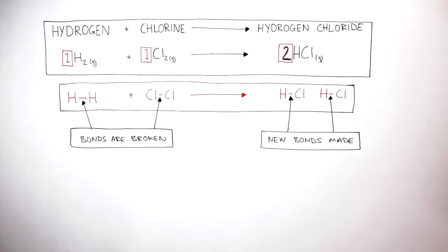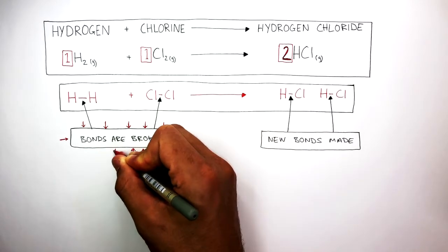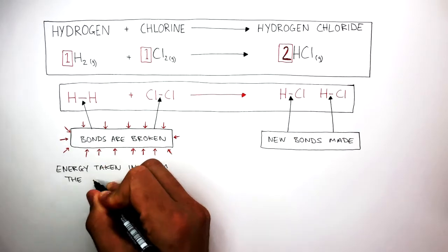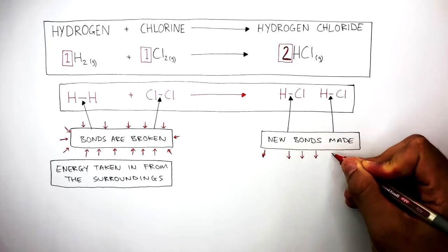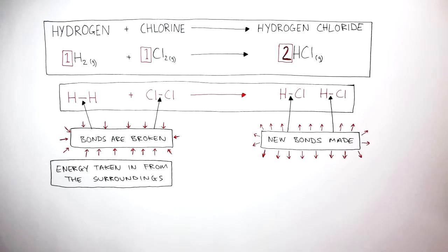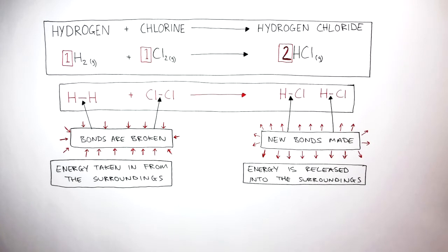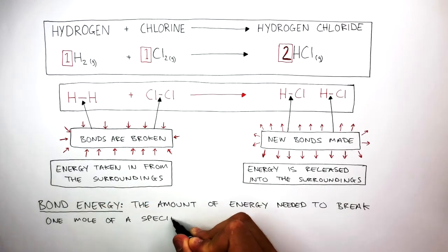When breaking bonds, energy is always taken in from the surroundings, represented by arrows going in towards the box. And when forming new bonds, energy is always released into the surroundings, represented by arrows pointing outwards. This forms the foundation of understanding how to use bond energies, because the definition of a bond energy is the amount of energy needed to break one mole of a specific covalent bond.